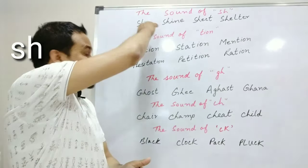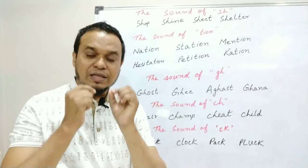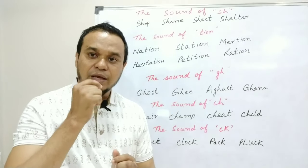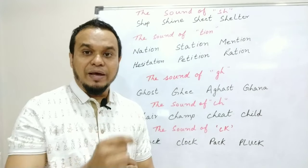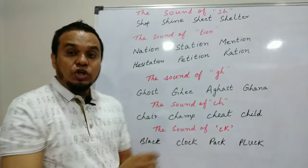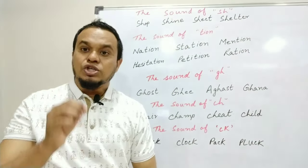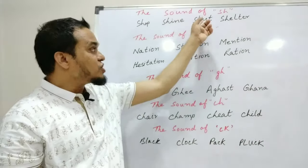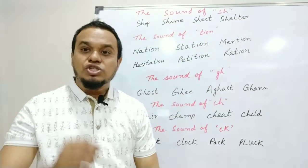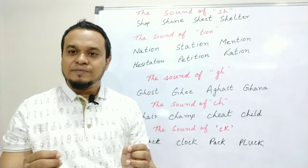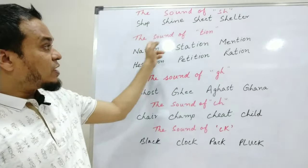S-H-O-P: SHOP. S-H-I-N-E: SHINE. S-H-E-E-T: SHEET. S-H-E-L-T-E-R: SHELTER. As you can clearly see, I read all of them with the SH sound. SH is the second spelling rule.